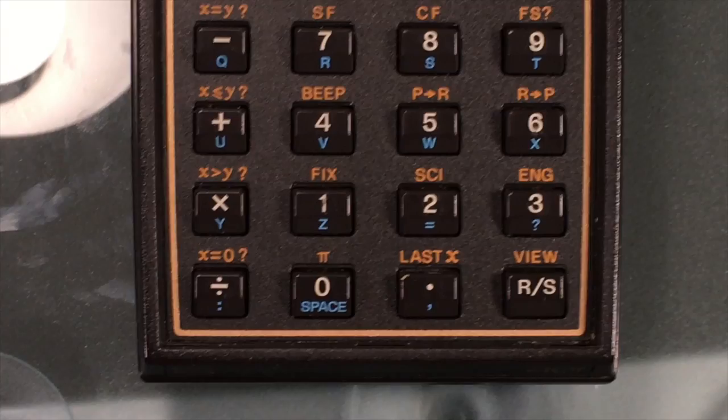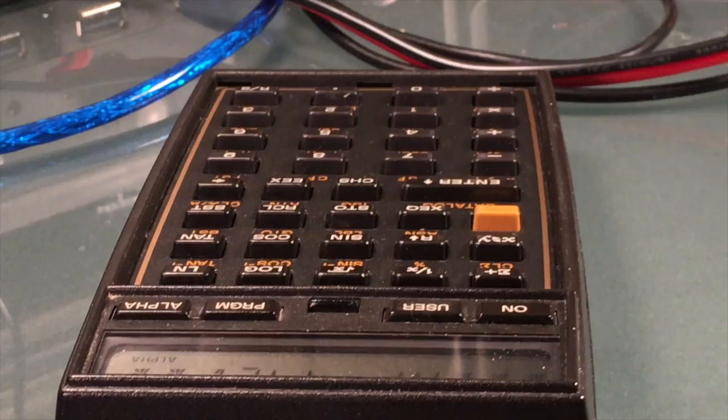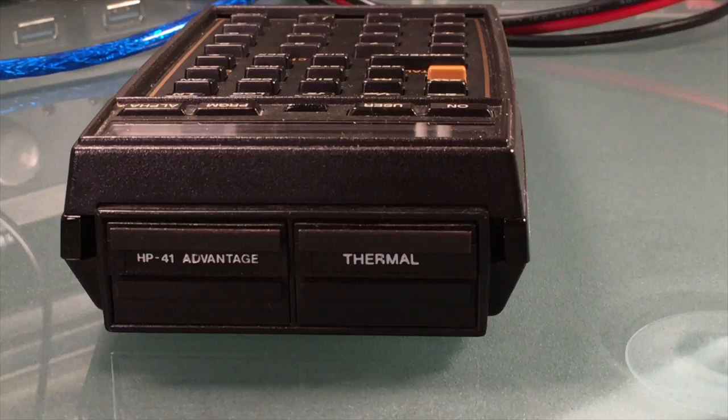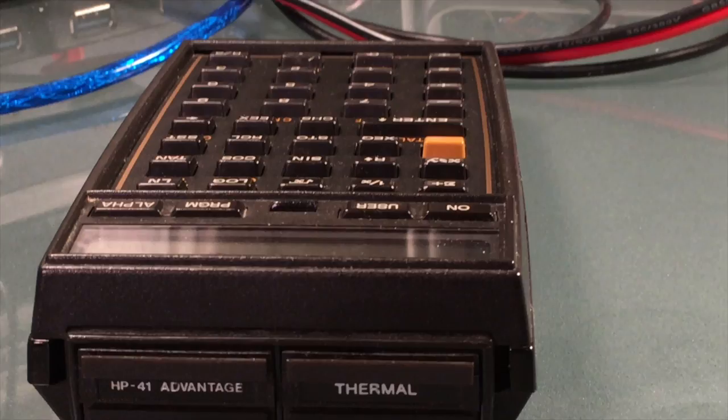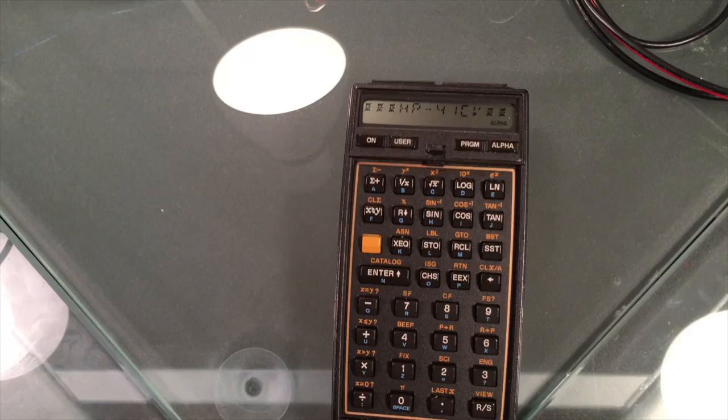One of the interesting things about this HP calculator and all the HP calculators produced at that time was that it's based on what's called reverse Polish notation. That is based on something called Polish notation, which was invented by Jan Łukasiewicz, a Polish philosopher. Basically, for Polish notation, instead of having an operand, then an operator, then an operand, you would have the operators on the left of the operands. For reverse Polish, you would have operators on the right of the operands.